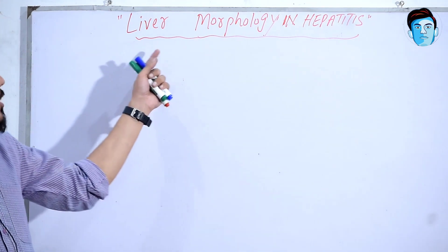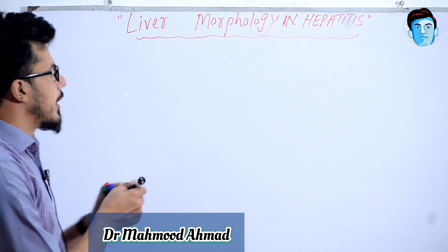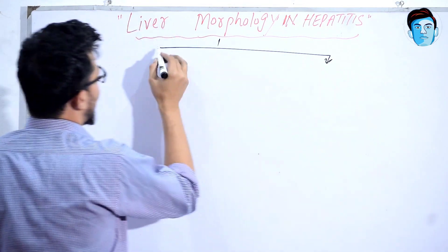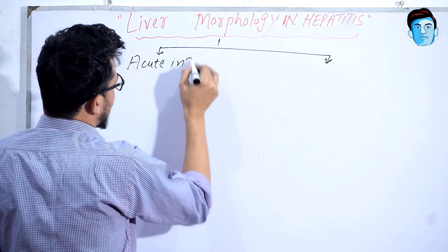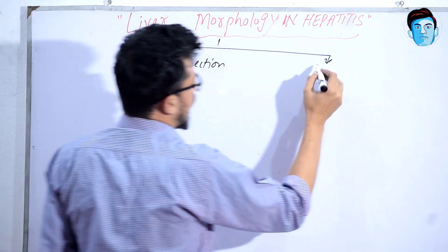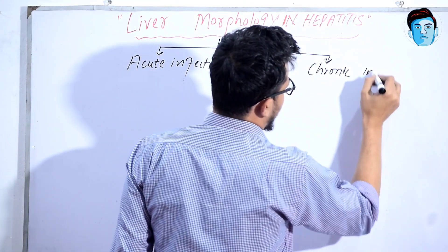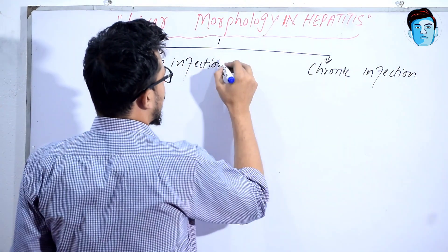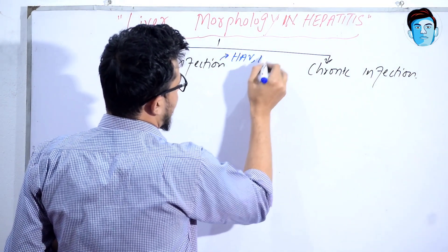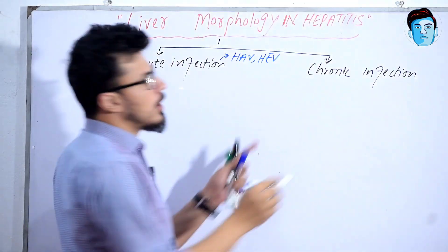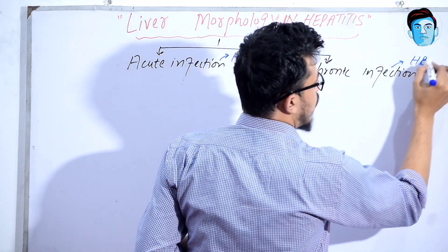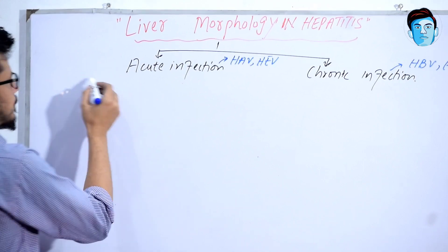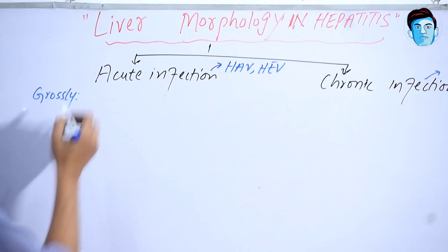Let's talk about liver morphology and hepatitis. Hepatitis occurs as a result of acute infection and chronic infection. Acute infection is mostly due to hepatitis A virus and hepatitis E virus, while chronic infection is usually from hepatitis B virus and hepatitis C virus.